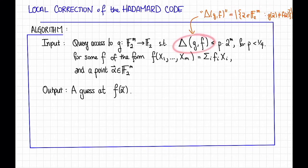So we want this Hamming distance between g and f to be at most p times 2 to the m for some parameter p, which is strictly less than a fourth. And we'll see why we want it to be less than a fourth in a moment.